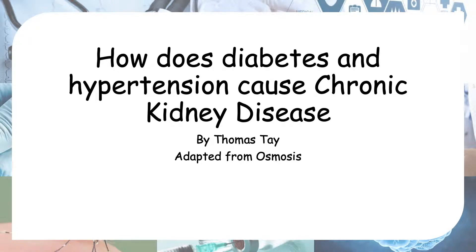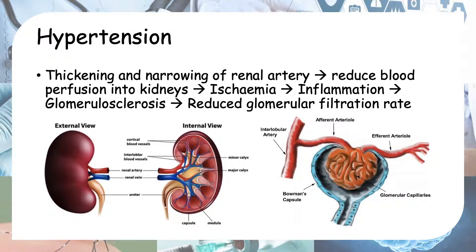Hello everyone. Today we'll be looking at how diabetes and hypertension lead to chronic kidney disease. Before we start, we need to know a little bit about the anatomy and physiology going on in the kidneys.